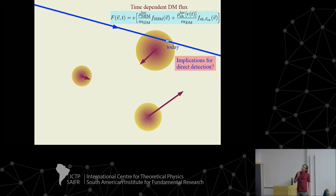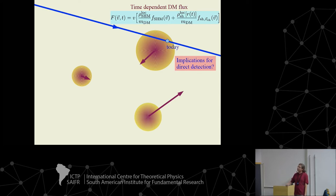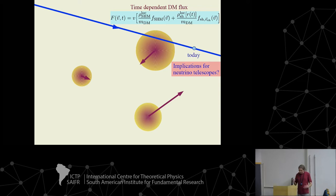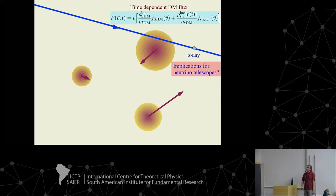If today we are immersed in such a subhalo, the dark matter flux receives two components: one from the smooth halo and one from the dark matter particles inside the subhalo, depending on the overdensity inside it. This would have implications for direct detection. It could also happen that we left the subhalo, say 1 million years ago — in that case there are no implications for direct detection experiments, but there could still be implications for neutrino telescopes, because the sun has a memory of what happened in its past — even up to 1 gigayear ago.